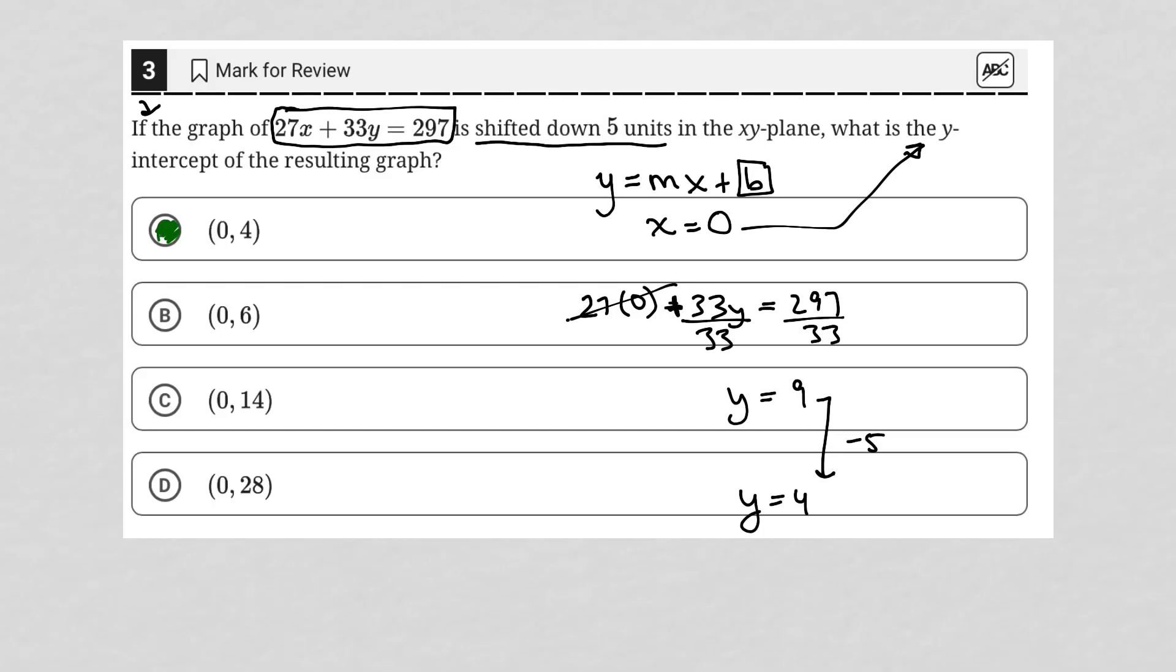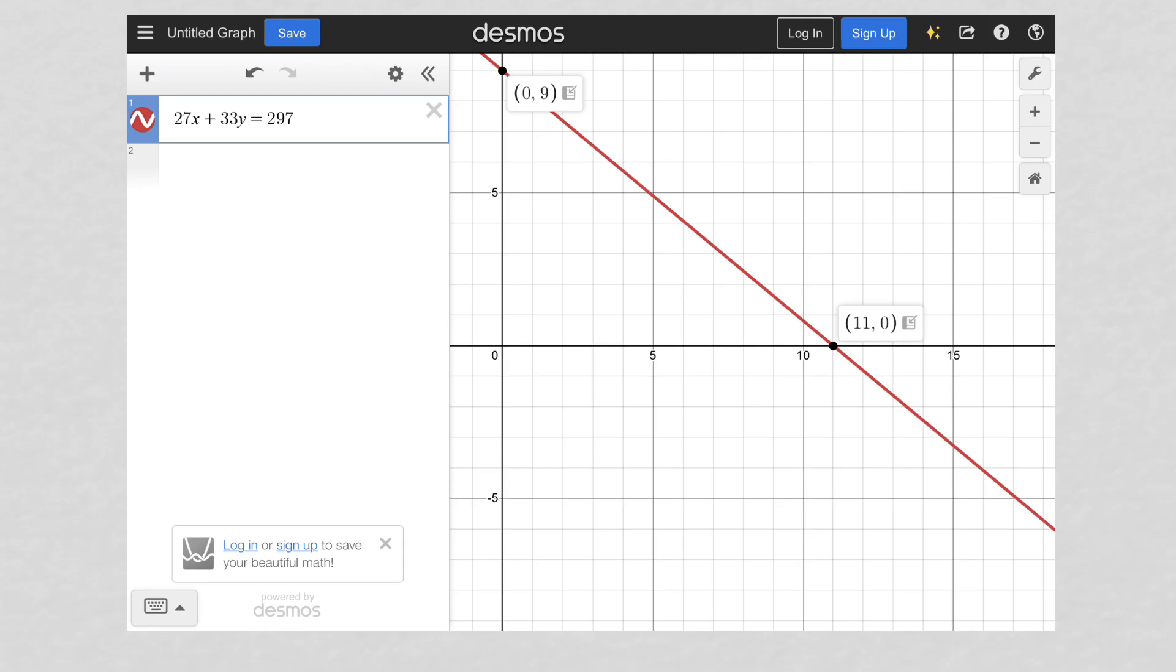Another way to do it is visually, where I can just plug in the equation provided in the question directly into Desmos here. We can see that our y-intercept is at zero, nine. And then if I shift it down five units,